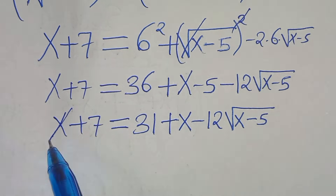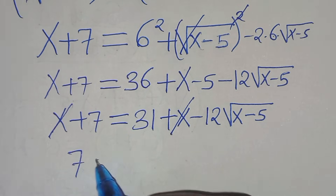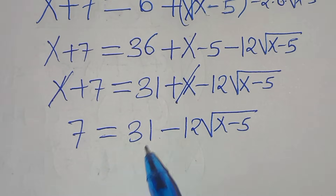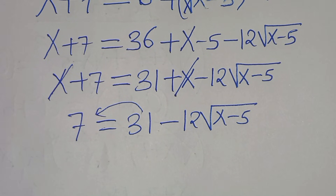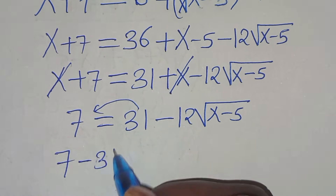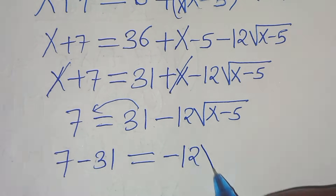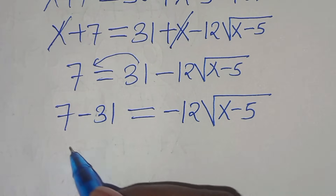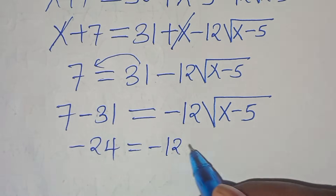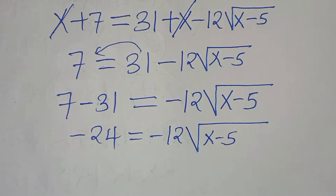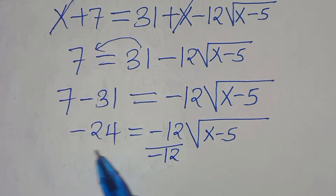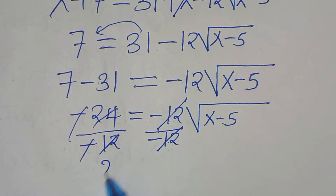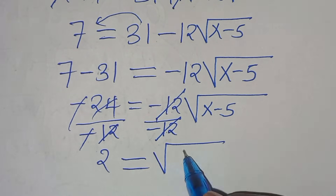The x terms cancel, leaving 7 equals 31 minus 12 times the square root of x minus 5. Taking 31 to the left: 7 minus 31 equals minus 12 times the square root of x minus 5, so minus 24 equals minus 12 times the square root of x minus 5. Dividing both sides by minus 12: 2 equals the square root of x minus 5.